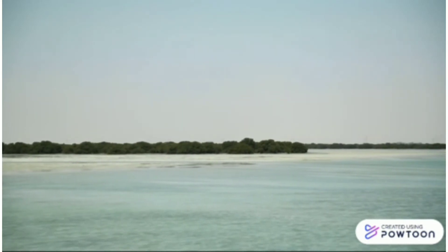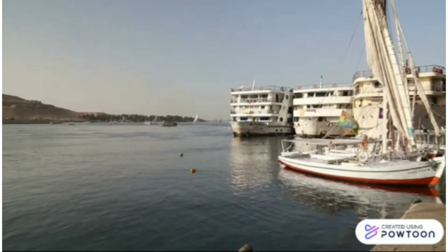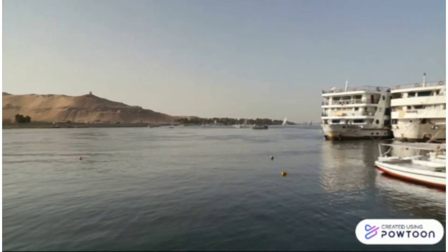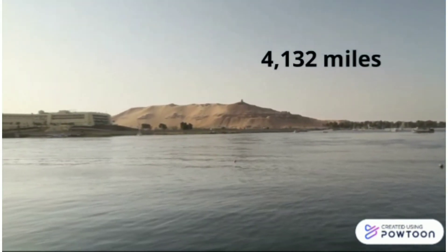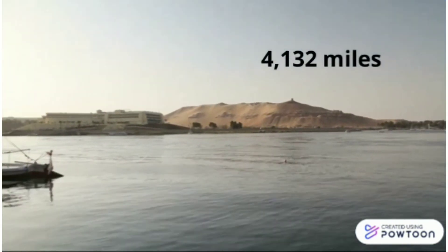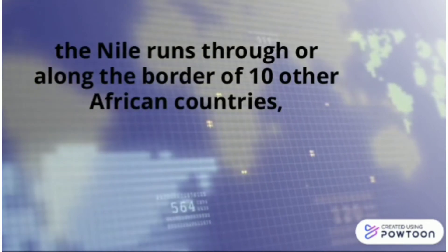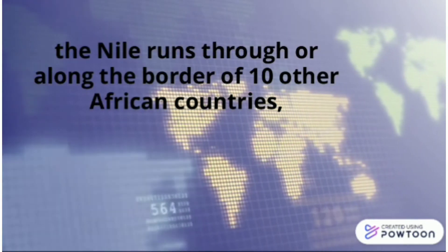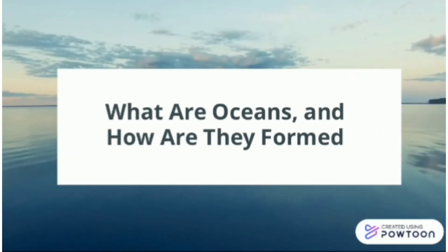Now for a fun fact: did you know that the river Nile is the longest river on Earth? It measures around 4,132 miles. Did you also know that the Nile runs through or along the border of 10 other African countries?